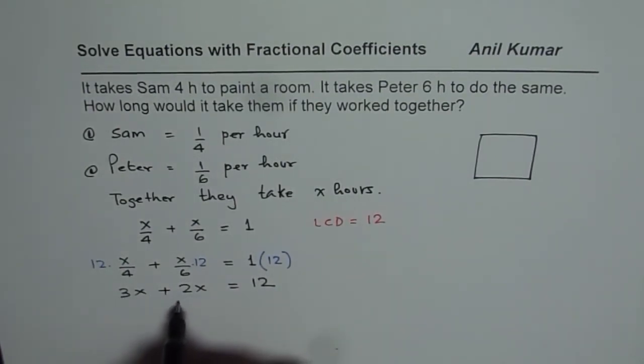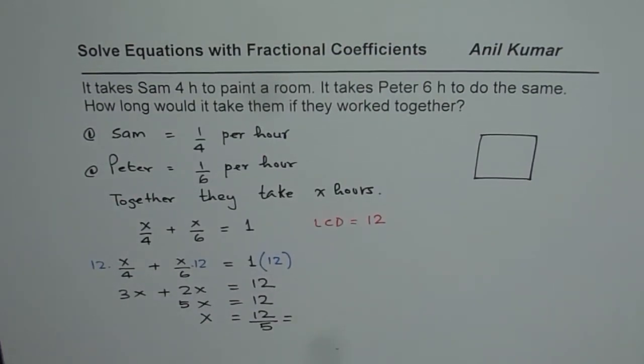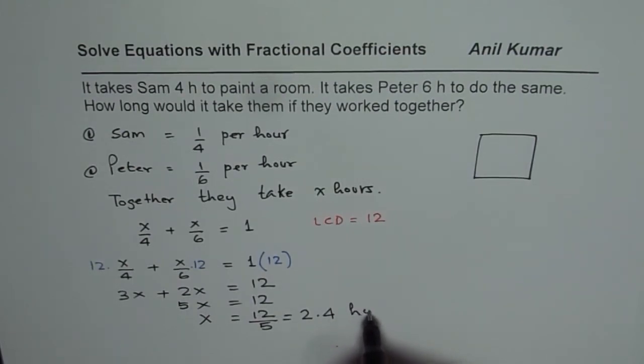When you add them, you get five x equals to twelve. You can divide by five to get the answer. Twelve divided by five, five times two is ten, we get two point four. The total job will take two point four hours.